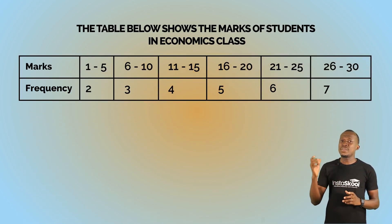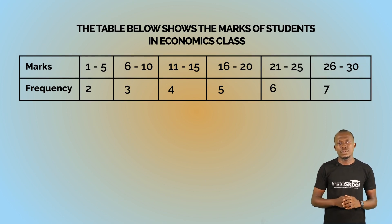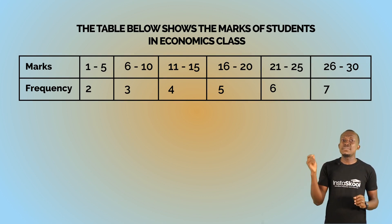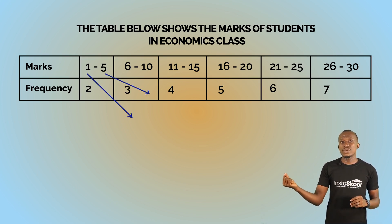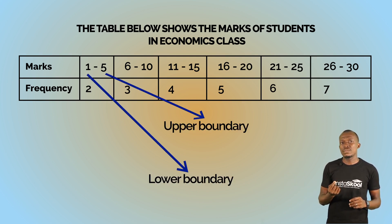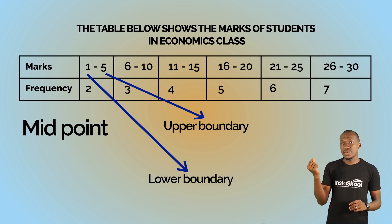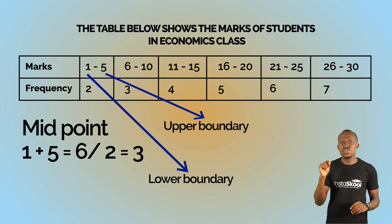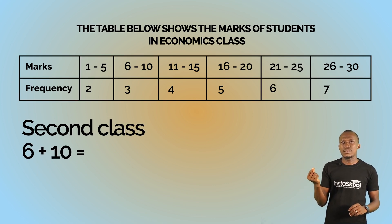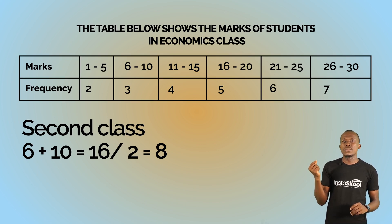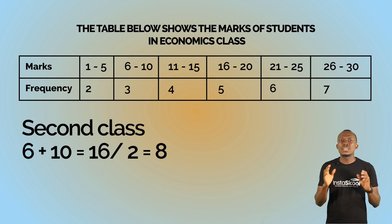In this example, they have given us the class intervals and their frequencies. The first thing to do is to get the midpoint for each observation. You add the lower boundary of the class interval and the upper boundary and divide by two. So 1 plus 5 gives us 6, divided by 2 gives 3 — that's the midpoint for the first class. For the second class, 6 plus 10 gives 16, divided by 2 gives 8. Follow that pattern through to the end.